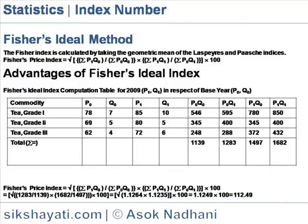Advantages of Fisher's ideal index. Fisher's index uses geometric mean, which is considered a better average for the construction of index numbers. Laspeyre's index and Paasche's index indicate opposing characteristics, and Fisher's index reduces their respective bias, as demonstrated by the time reversal and factor reversal tests. Both the current year and base year prices and quantities are taken into account by this index. However, Fisher's index is not widely used owing to the practical limitation of calculating data.